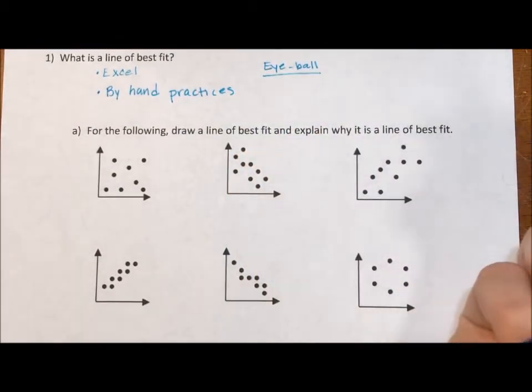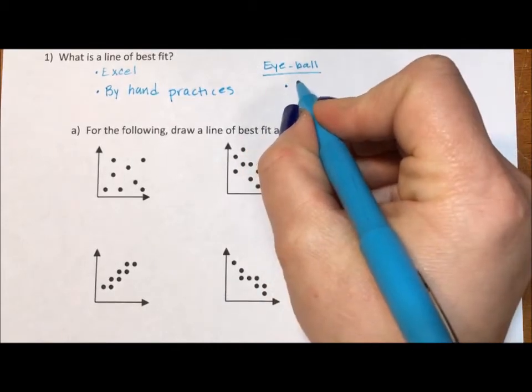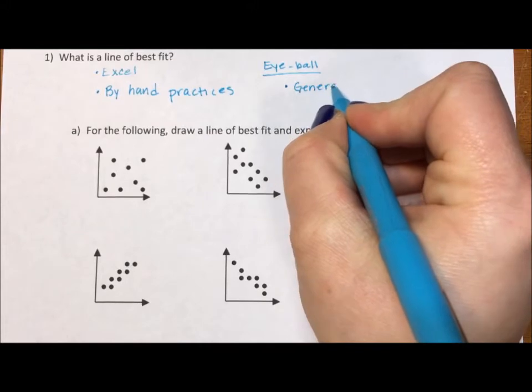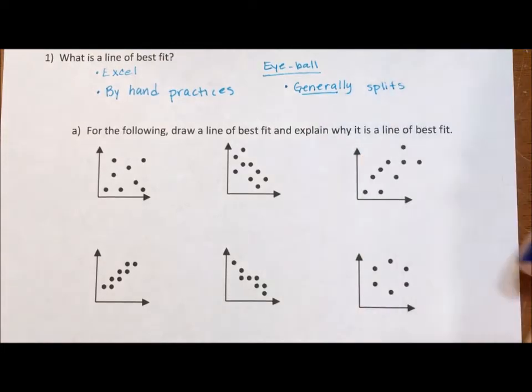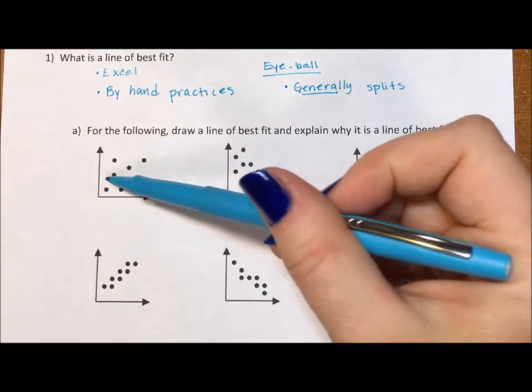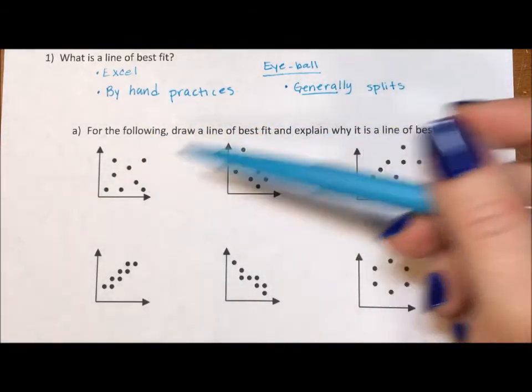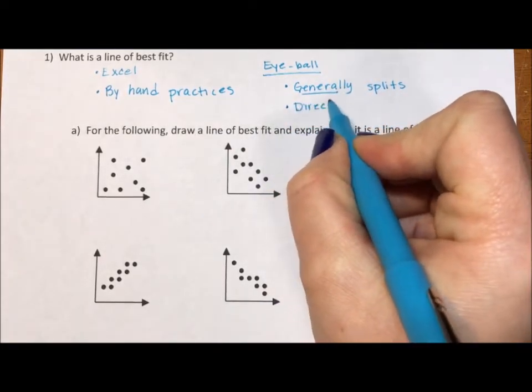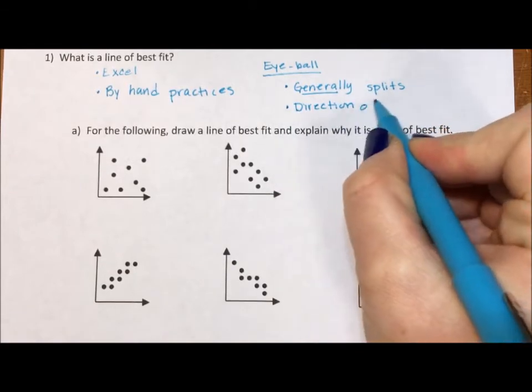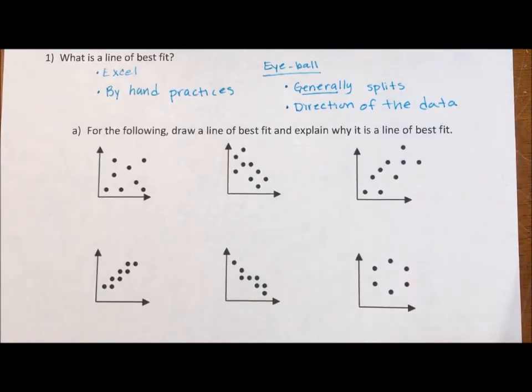In a line of best fit, I really think of this as having two criteria. The first criteria is that it generally, and I've got to really stress this word, generally splits the points. The reason I say generally is sometimes you have some points that are kind of outliers that may not fit well into your line of best fit. And then the second is it should go in the direction of the data. These are the two criteria you need when you are doing an eyeball line of best fit.